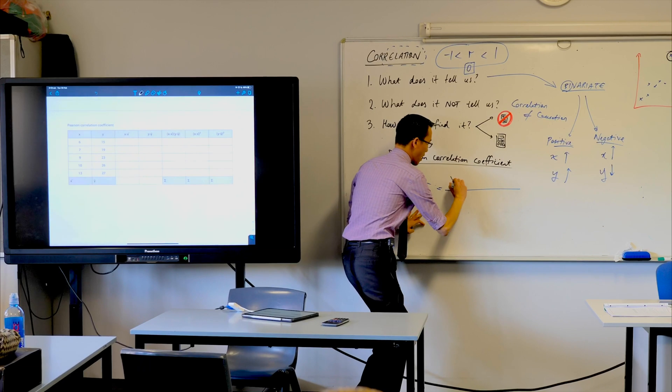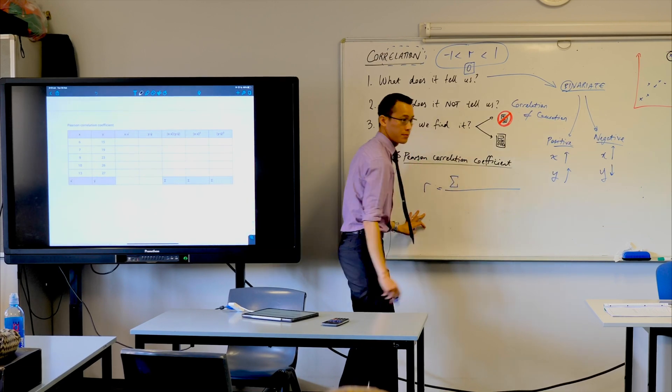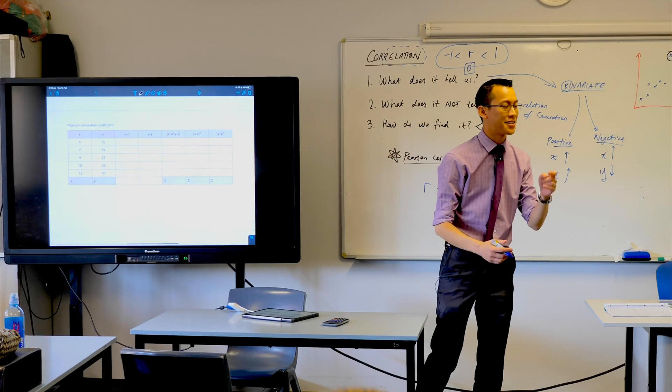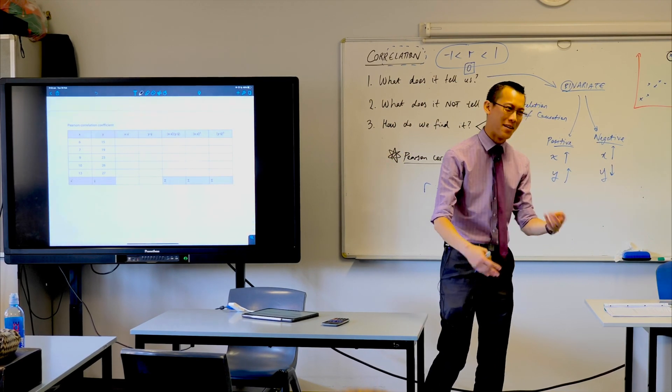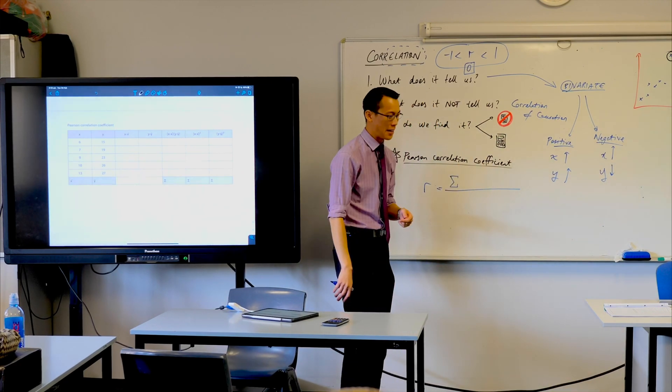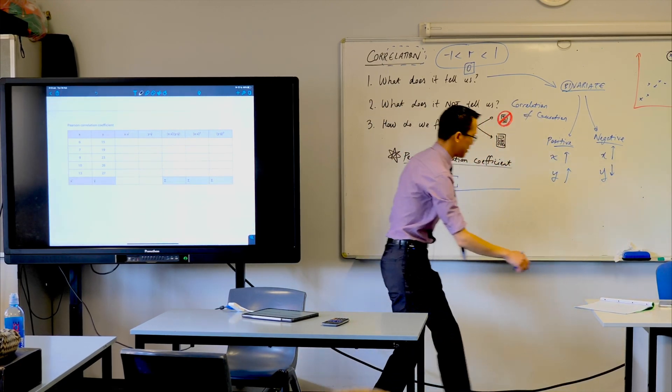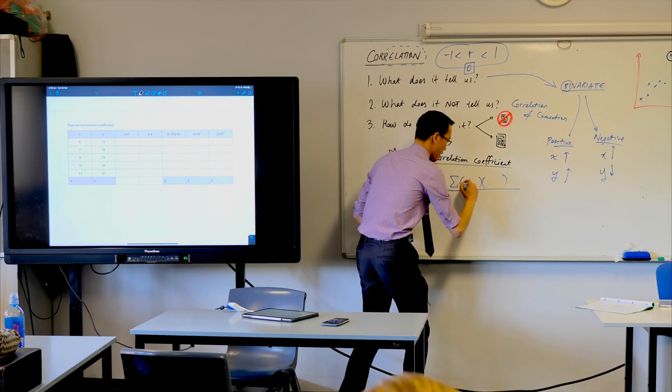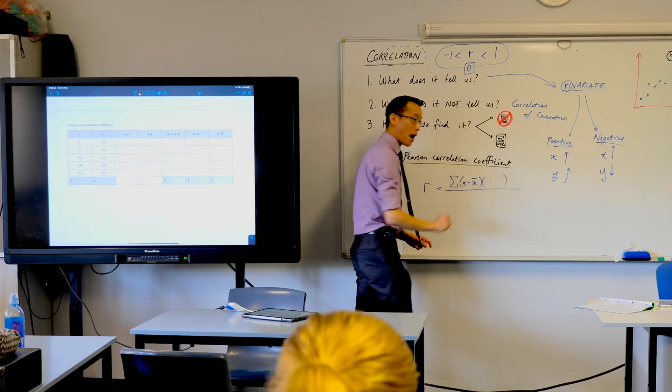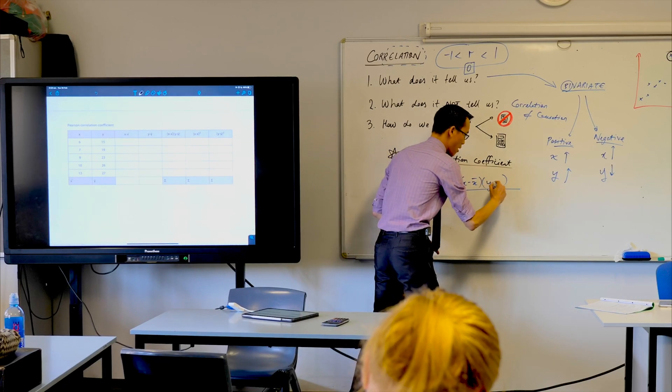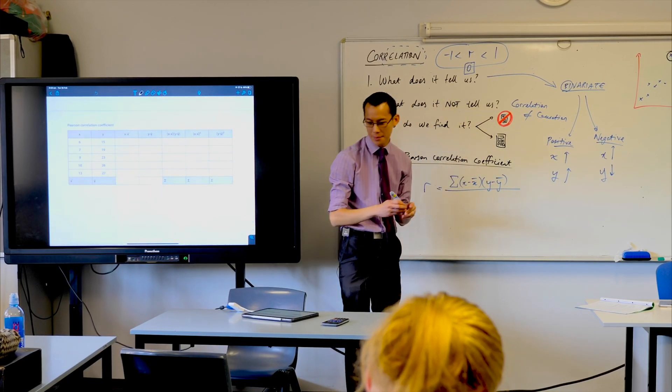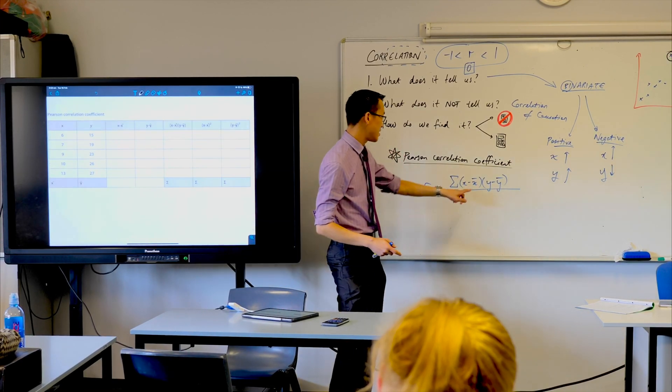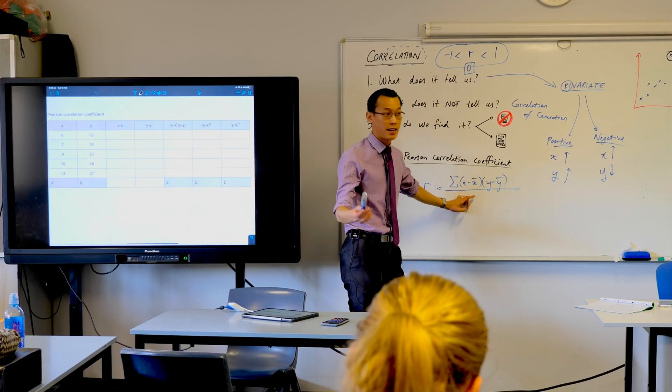It's a fraction. What's on the numerator? You recognize this Greek symbol—Sigma. What does it do? It's the sum of a bunch of different things. Then you'll see some things in brackets: x minus x-bar times y minus y-bar. That's the way we say it.